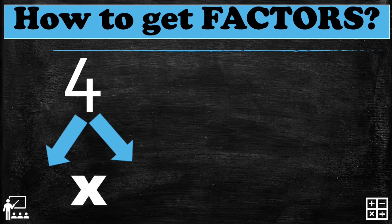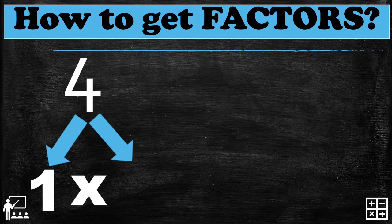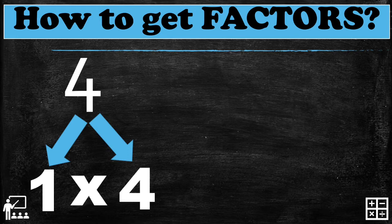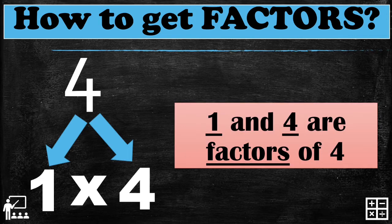Let's look at the number four. Can you guess two numbers that if we multiply together we'll get the product four? I'll show you one number — one. Can you guess the number that we multiply by one to get four? That's right, number four. One multiplied by four gives us a product of four. It means one and four are factors of four.